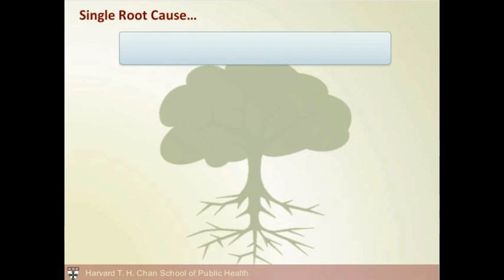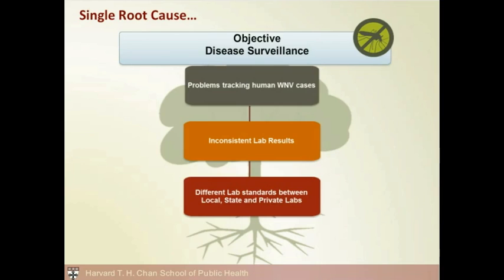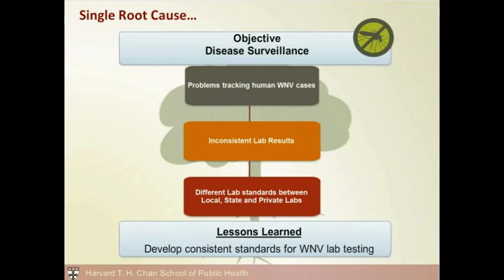Our next example illustrates a single root cause where the objective is disease surveillance for a West Nile virus outbreak. The public health challenge was tracking people who had become infected with the West Nile virus. Interviews and analysis showed the intermediate cause was inconsistent lab results. Investigation revealed the problems were occurring because the various types of labs — state, local, and private — had different testing standards and used different criteria for classifying a West Nile virus case. The lesson learned was to develop clear, consistent, uniform data systems for West Nile virus lab testing.